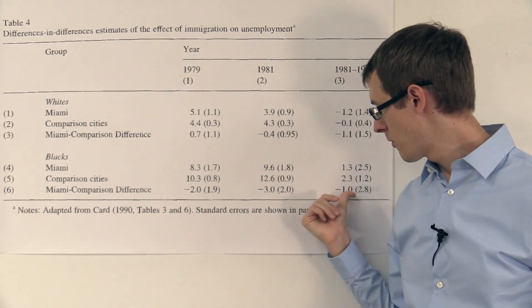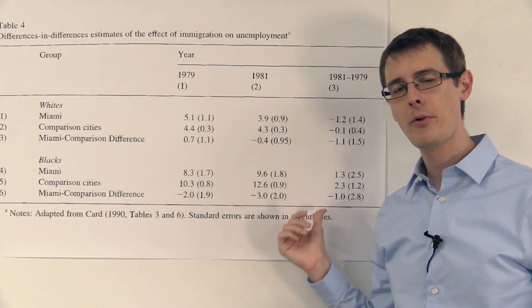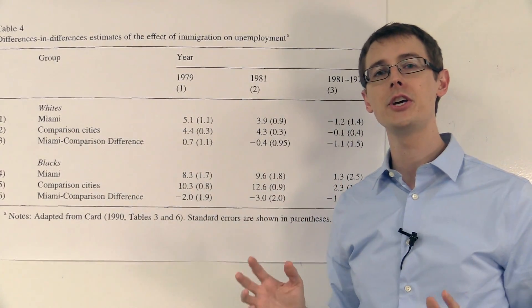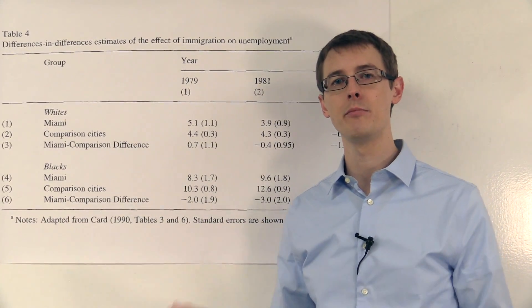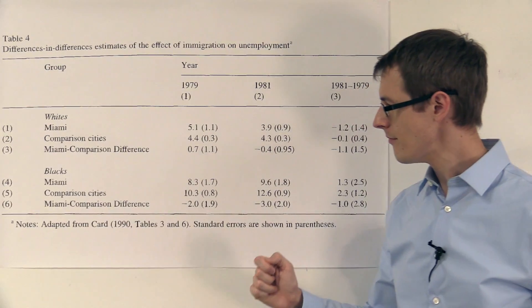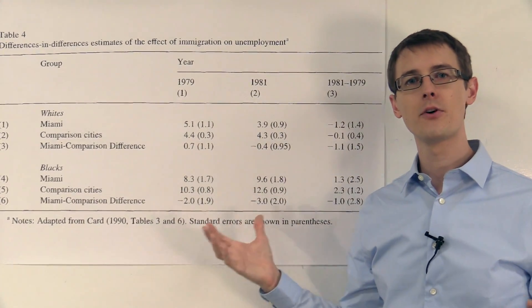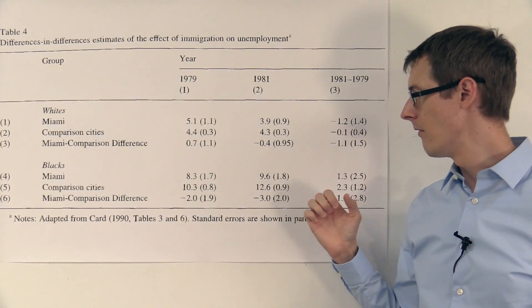So for both whites and blacks, our conclusion from looking at these point estimates is that immigration is lowering the unemployment rate, or it's increasing employment, increasing the percentage of people who have jobs.